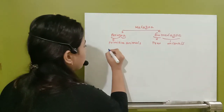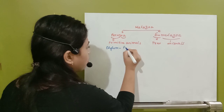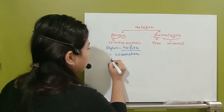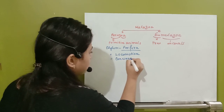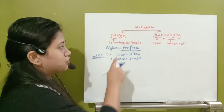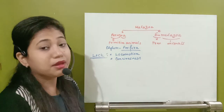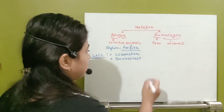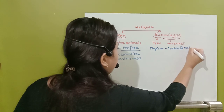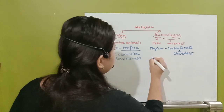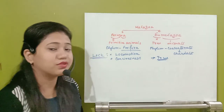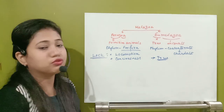The animals are grouped into two subdivisions. The first group, Parazoa, contains only one phylum - the phylum Porifera - which does not show locomotion and consciousness. The rest of all the other animals, from phylum Coelenterata up to phylum Chordata, are the true animals. They have all the characteristics of a true animal.